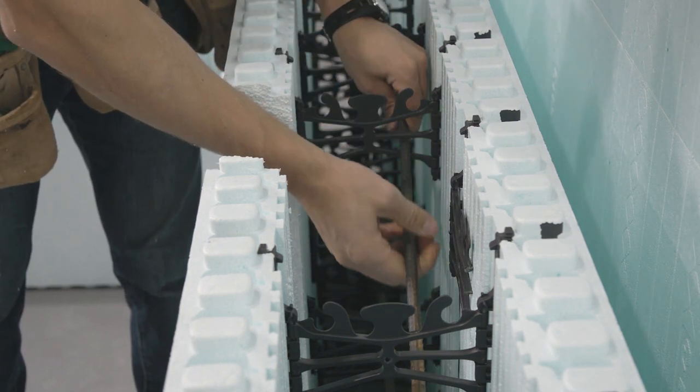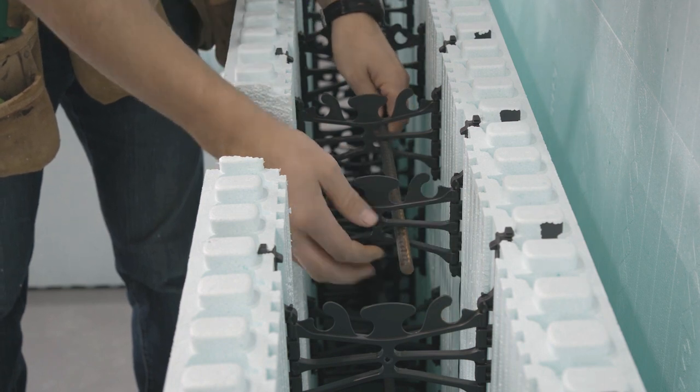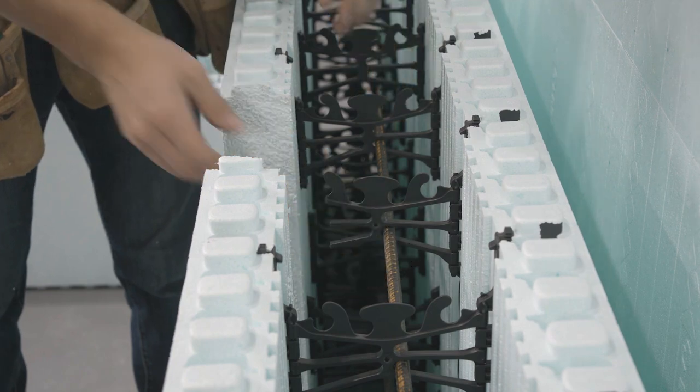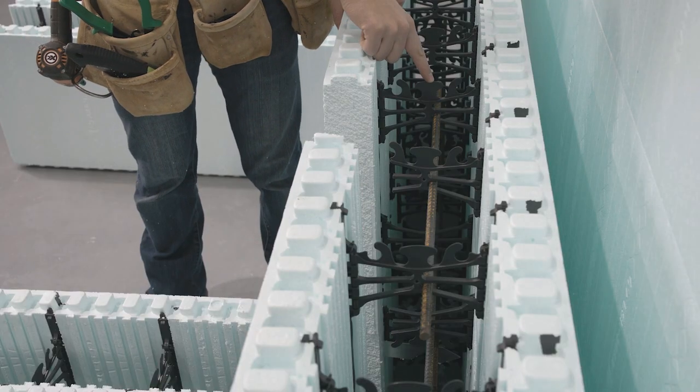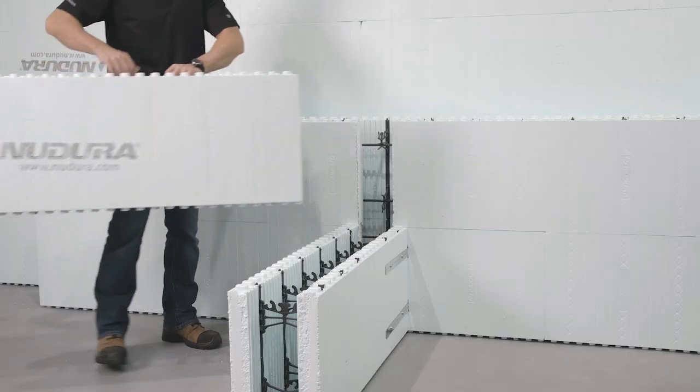This step eliminates the need to add additional reinforcements to the outside of the T-connection. The T-portion of the wall can now be set in place.